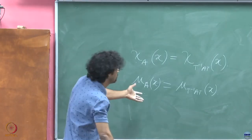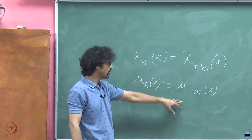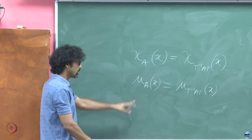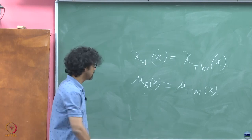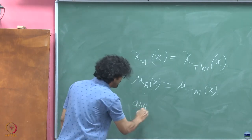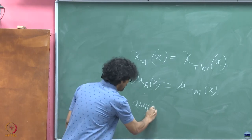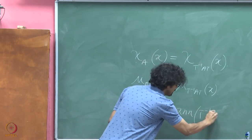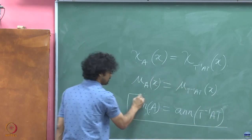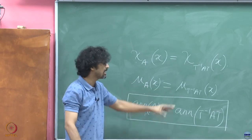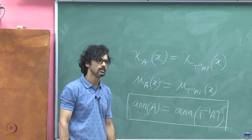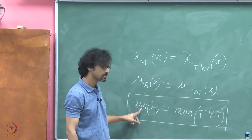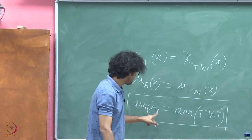Now we will see that the minimal polynomial also remains invariant under a change of basis. We are actually going to say more than this: the annihilating ideal of A is the same as the annihilating ideal of T⁻¹AT. If we establish that, then the minimal polynomials must be equal — since the same annihilating ideal has the same unique monic generating element.